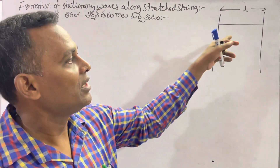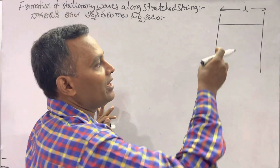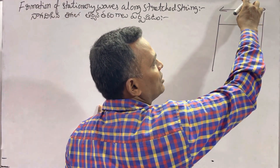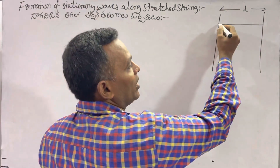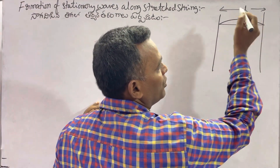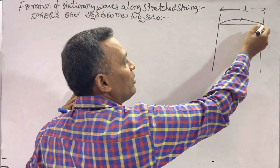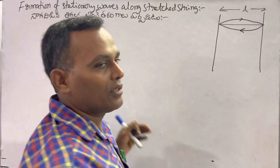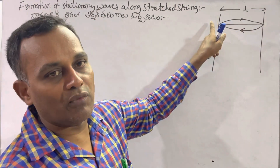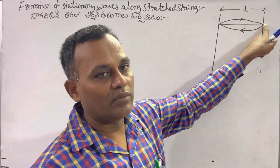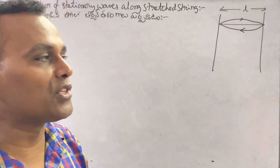So we have to fix the string. It will be plucked by applying some force. A wave starts from one of the rigid supports and ends at the second one. Then it will be reflected back.